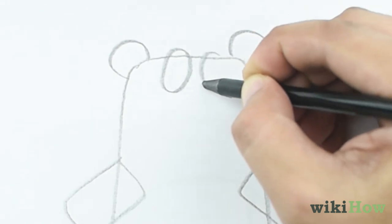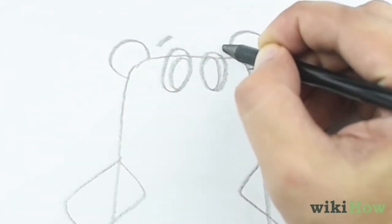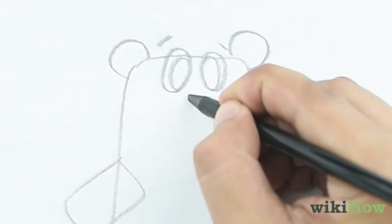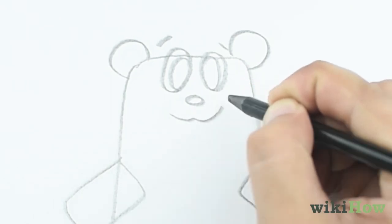Draw two ovals for the eyes, with two slanted lines on top for the eyebrows. Add a small circle for a nose, then draw a curved smile beneath that.